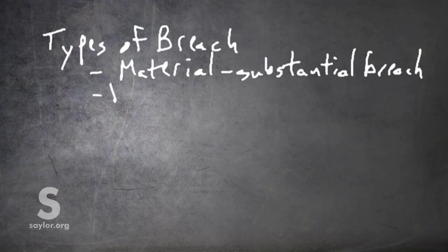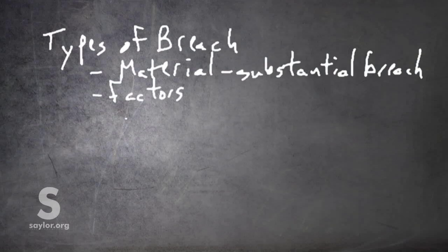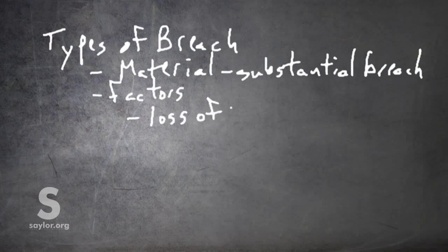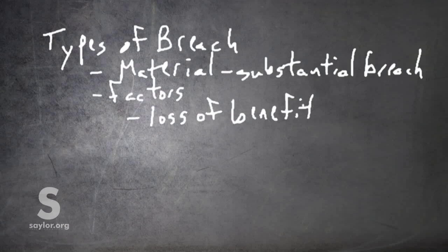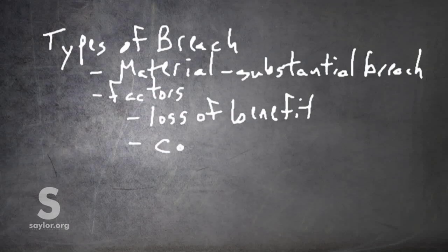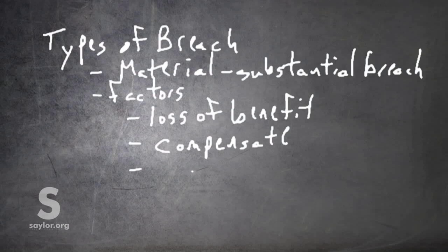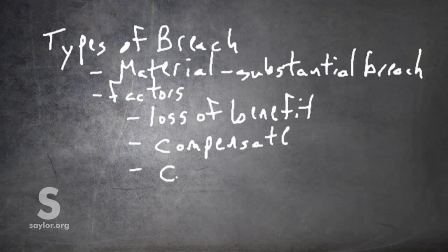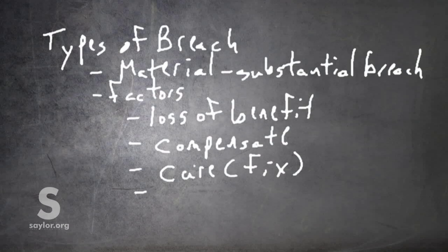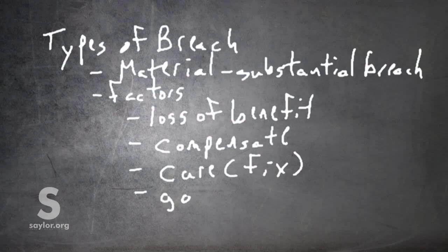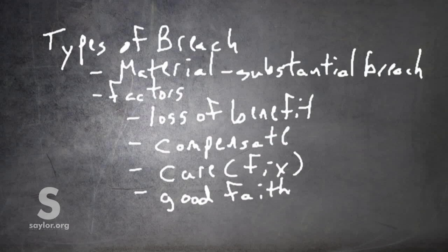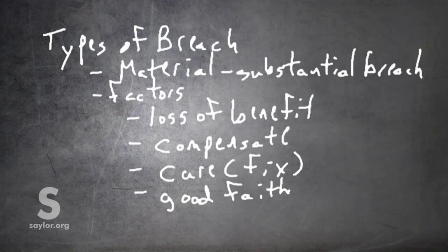Some of the key factors in determining whether there is a material breach include looking at how important is the loss of benefit that the aggrieved party reasonably expected, how easy it would be to compensate the aggrieved party for the loss of the benefit, how likely it is that the breaching party can and will cure or fix the problem, and lastly, did the breaching party act in good faith. Every breach or every potential breach is fact specific and the fact finder, the judge or the jury, is going to look at specific facts of the case.